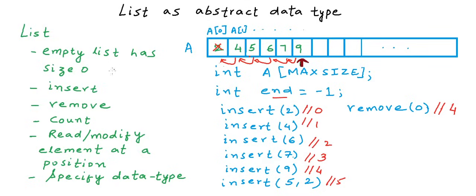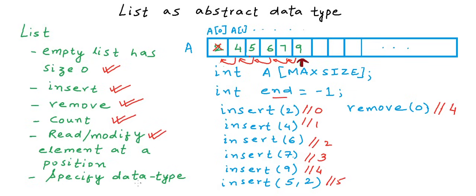This gives us a pretty complete implementation of the dynamic list described as an abstract data type. We call the list empty when `end` equals minus one. We can insert at a particular position with shifting. We can remove an element with shifting. We can count elements — it equals `end + 1`. We can read or modify an element at a position since it's an array. And choosing the data type is just choosing the array type.